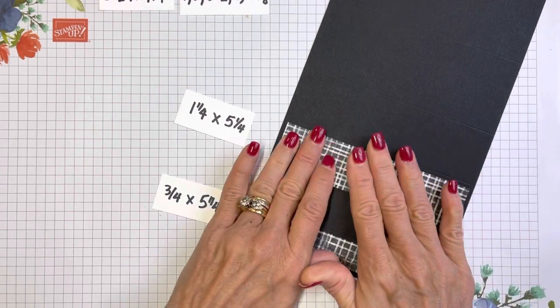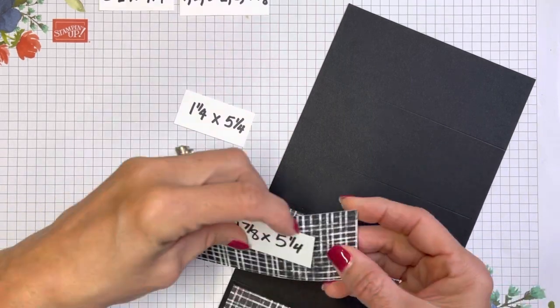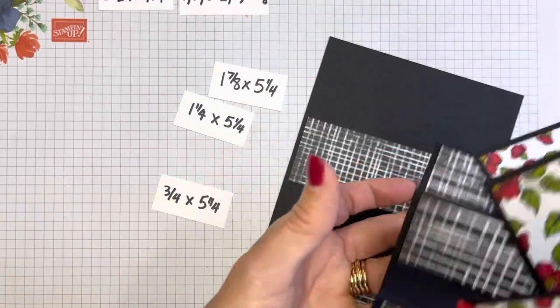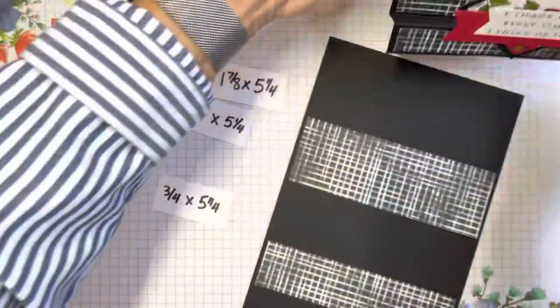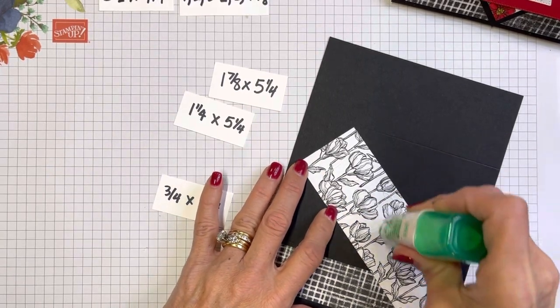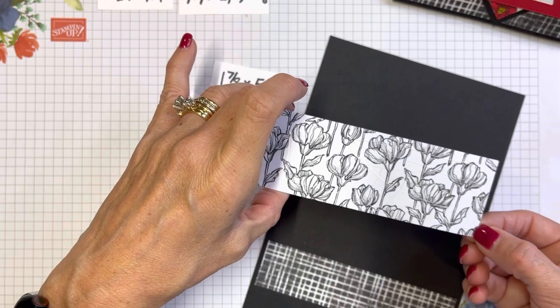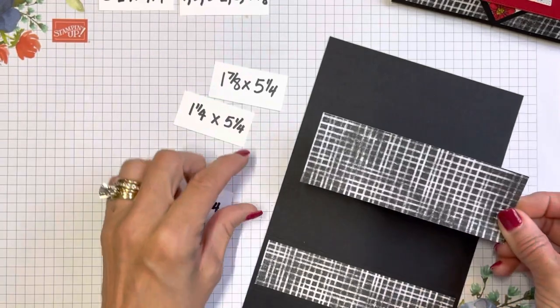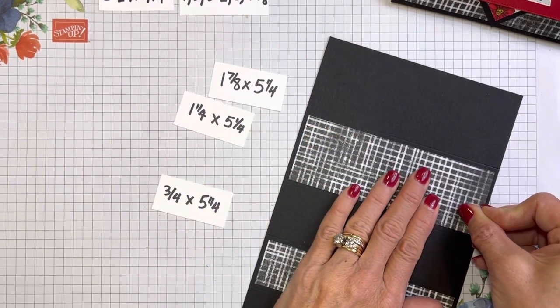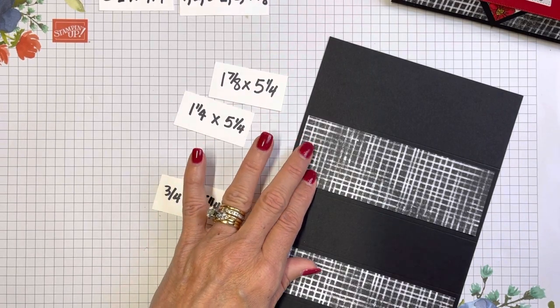Since this is 5½, we're going to 5¼, and this section was one-inch, and we put ¾. This won't be seen, but this next piece will be seen. This next piece is going to be 1¼ by 5¼.